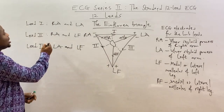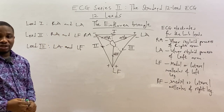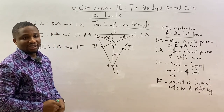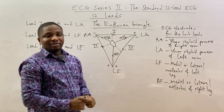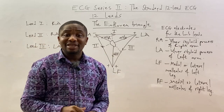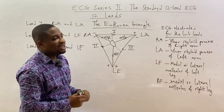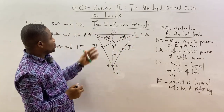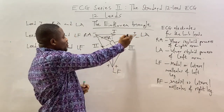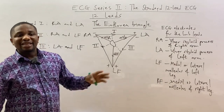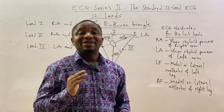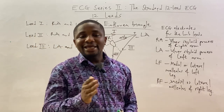Lead three is between the left arm electrode and the left foot electrode. The flow of electrical activity is always toward the positively charged electrode — so lead one flows toward the left, lead two toward the left foot, and lead three also toward the left foot. Wherever you see positive charges in a lead, that is where the electrical activity flows.